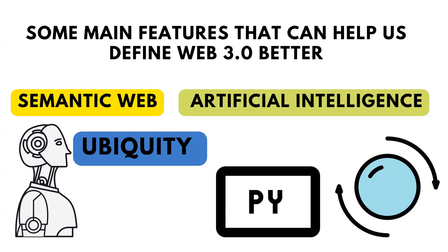And what is ubiquity? Ubiquity is platform independency — meaning the applications built on the Web 3 ecosystem will be platform independent. You can run those applications from anywhere, on every device.